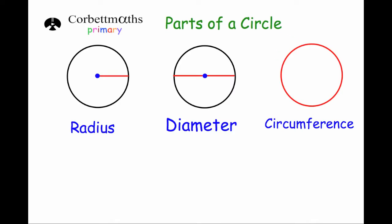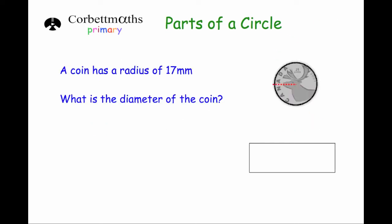Okay, let's have a look at three questions now. Okay, the first one. A coin has a radius of 17 millimeters. What is the diameter of the coin?